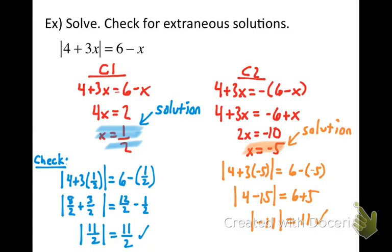When you have variables on both sides of the equation, always use two cases: one where you assume the quantity inside is positive and thus equal to what's on the other side, and one where you assume it's negative and thus the opposite of what's on the other side. Then plug your solutions back into the original equation to see if you got true solutions or extraneous ones. That's your charge. Thanks for watching — I know it's difficult, but understandable, and you can do it.